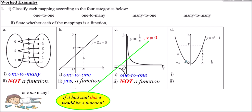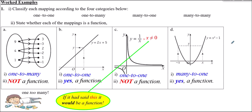Mapping D is y = x² − 1. We can have two different inputs, say x and −x, going to the same y-value. Both values cut the same height, so this is many-to-one. Many-to-one is an acceptable type for a function, so yes, mapping D is a function. So only B and D are functions; A and C were there to catch you out — C in particular was a bit sneaky.